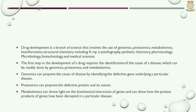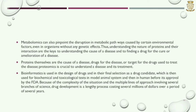The first step in the development of a drug requires the identification of the cause of the disease, which can be readily done by genomics, proteomics, and metabolomics. Genomics can pinpoint the cause of disease by identifying the defective gene underlying a particular disease. Proteomics can pinpoint the defective protein and its nature. Metabolomics can throw light on the biochemical interaction of genes and show how the protein products of genes have been disrupted in a particular disease. Metabolomics can also pinpoint disruptions in metabolic pathways caused by certain environmental factors, even in organisms without any genetic effects. Thus, understanding the nature of proteins and their interactions are the keys to understanding the cause of a disease and to finding a drug for its cure.